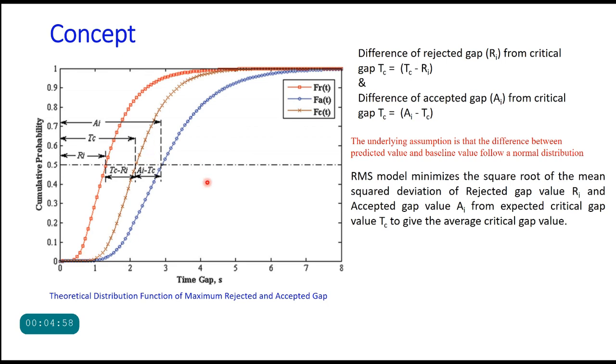The underlying assumption is that the difference between predicted value and baseline value follows a normal distribution. Therefore, it will minimize the square root of the mean squared deviation of rejected gap value Ri and accepted gap value Ai from expected critical gap value Tc to give the average critical gap value.